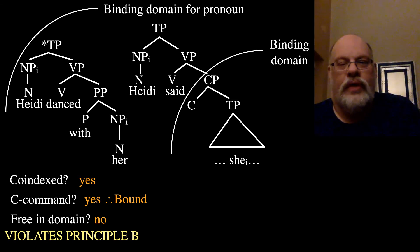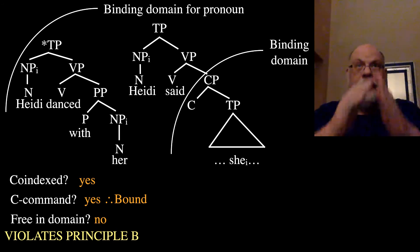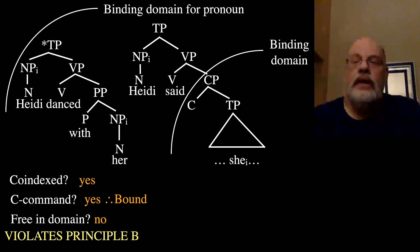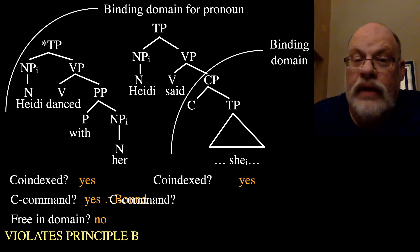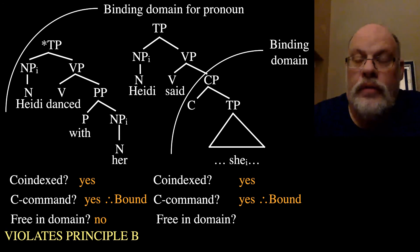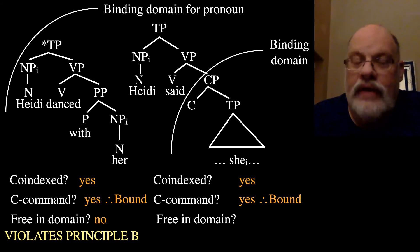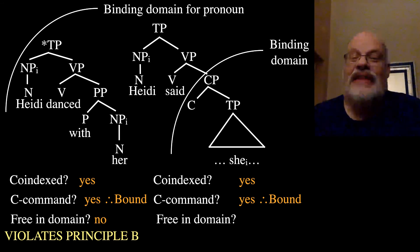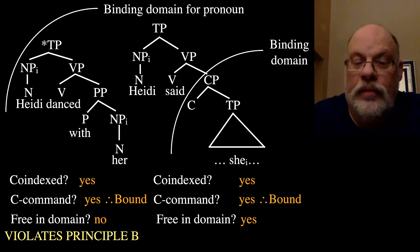Now let's contrast that with some situations where the pronoun is in a different clause. I've marked with an arc in the tree on the right the binding domain for the pronoun she. The pronoun looks up the tree and sees there's a CP, so that's its binding domain. In this case, we have a co-indexation — the noun phrase she is co-indexed with Heidi, and they are in a C-command relationship, so they're bound. The pronoun she is bound by Heidi. But is it bound within its domain? No, it's not bound within its domain — it's free within its domain, because the antecedent is on the other side of that curved line. So it's free in its domain, and that means it meets Principle B. Principle B says that pronouns must be free in their domain.